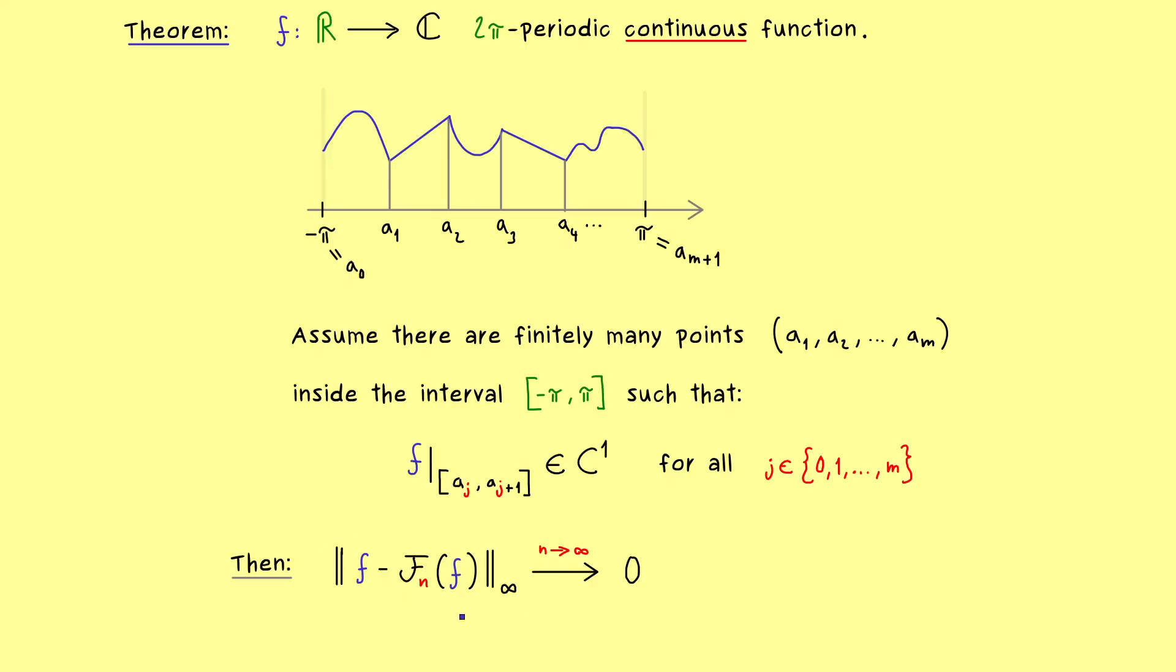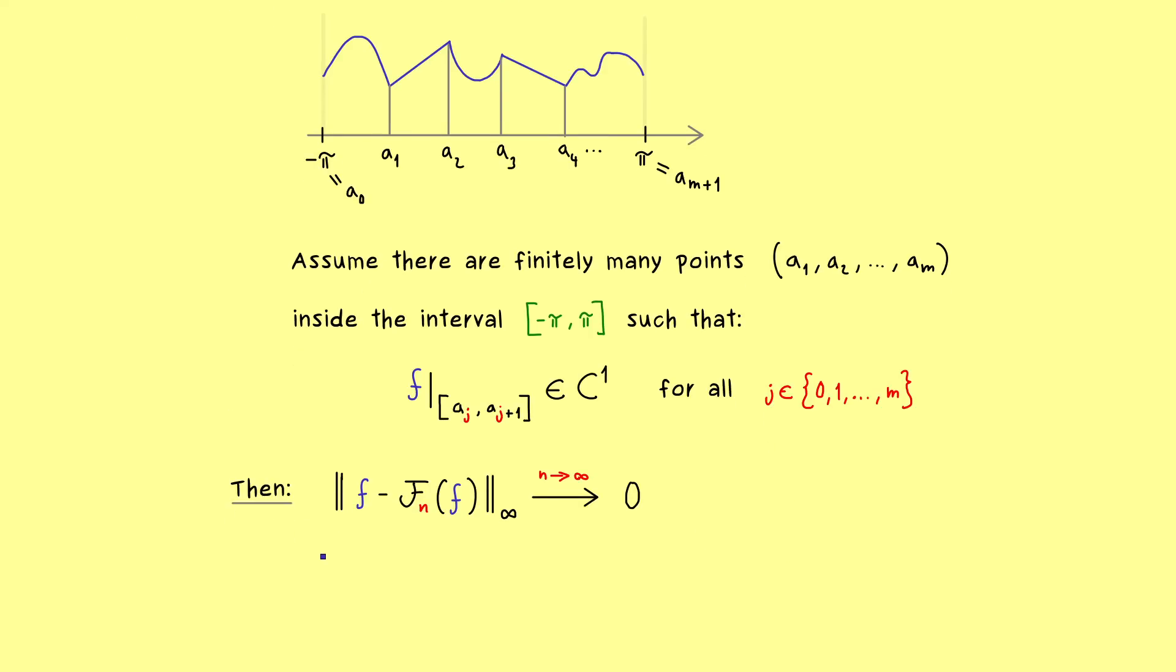So this is the nice theorem which tells us that we actually can have the uniform convergence for some special functions f. Now just to make the theorem complete, let's also put in the definition of the Fourier series. It's given as an orthogonal projection in L2 where our orthonormal system e_k is given by these exponential functions. Hence again the theorem tells us that we can uniformly approach the function f by using these exponential functions. So it's a really strong result.